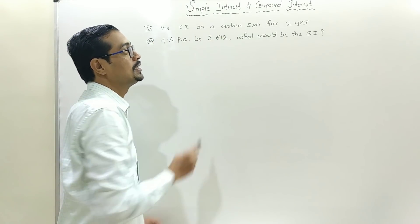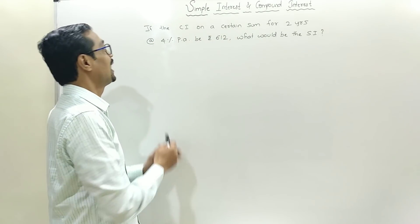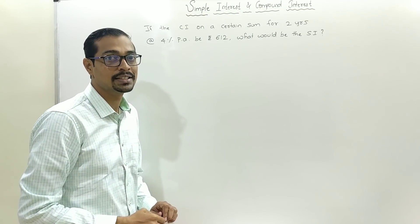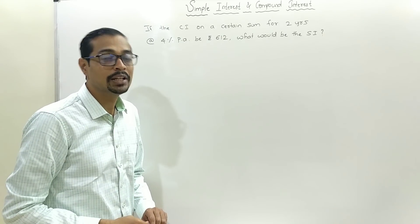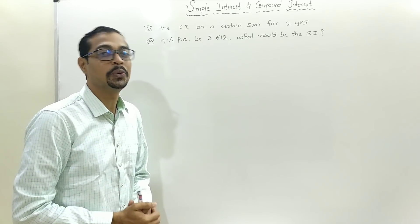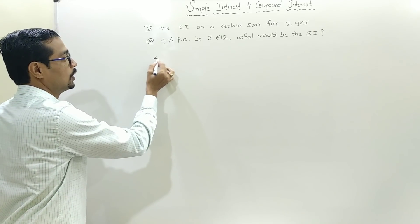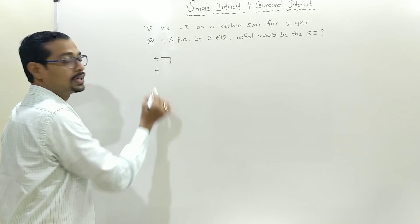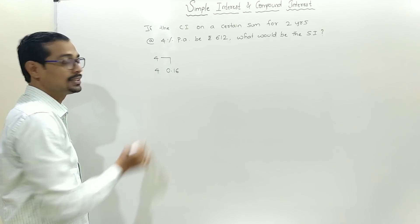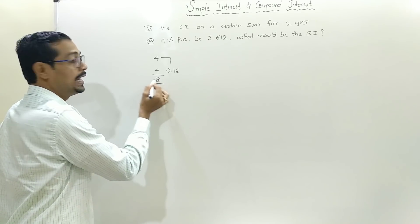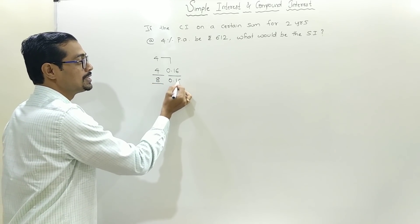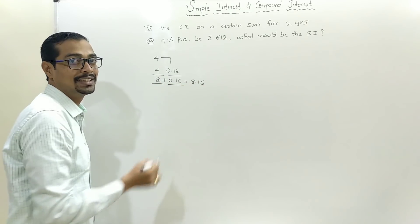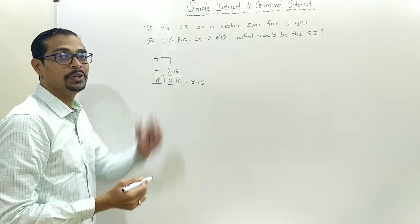If the compound interest on a certain sum for 2 years at 4% per annum is 612, what would be the simple interest? First of all, we will calculate the compound interest rate for 2 years. 4 plus 4 plus 4% on 4 equals 0.16. So: 8 for simple interest, difference 0.16. Total: 8.16. This is the compound interest rate for 2 years.